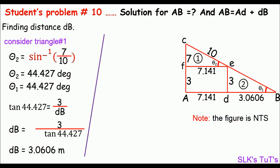Remember, AB is AD plus DB. So AB equals AD, that's 7.141, plus DB, that's 3.0606. So we get AB equals 10.20 meters.